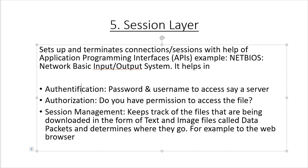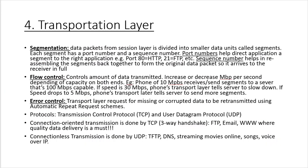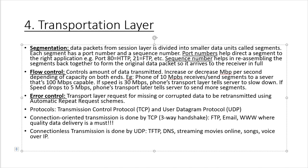Once the Session layer is done, it passes the data down to the Transport layer. The Transport layer, Layer 4, performs three functions. The first is segmentation: it takes data packets from the Session layer and divides them into smaller units called segments. Each segment has a port number and a sequence number. The port number directs a segment to the right application — for example, port 80 for HTTP and port 21 for FTP.